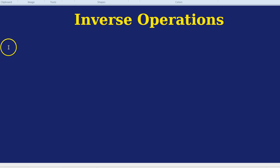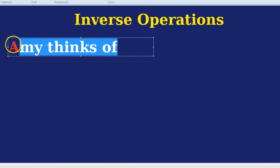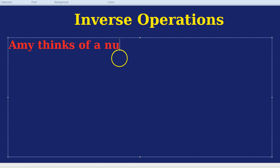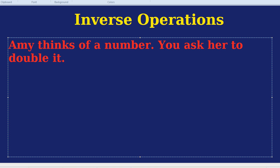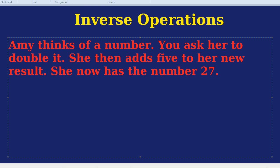This is how you do it. The scenario would be: Amy thinks of a number. You ask her to double it. She then adds five to her new result. She now has the number 27. So she tells you: I have the number 27.